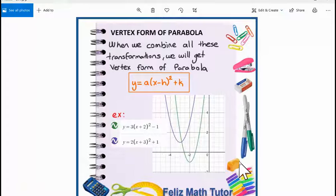Now we can talk about vertex form of parabola which we get from different transformations and operations. So vertex form of parabola is something like a in parentheses x minus h to the square plus k.